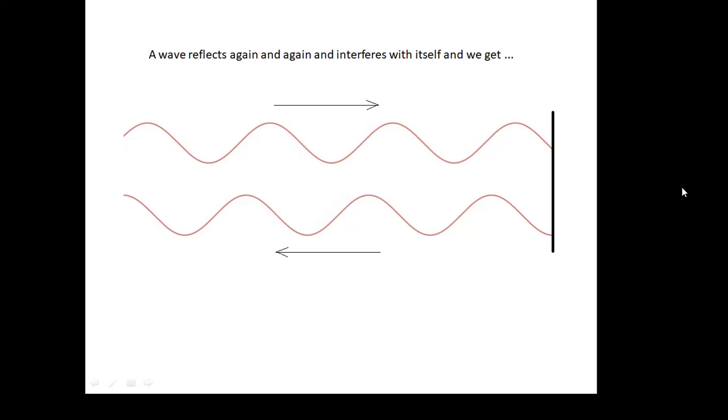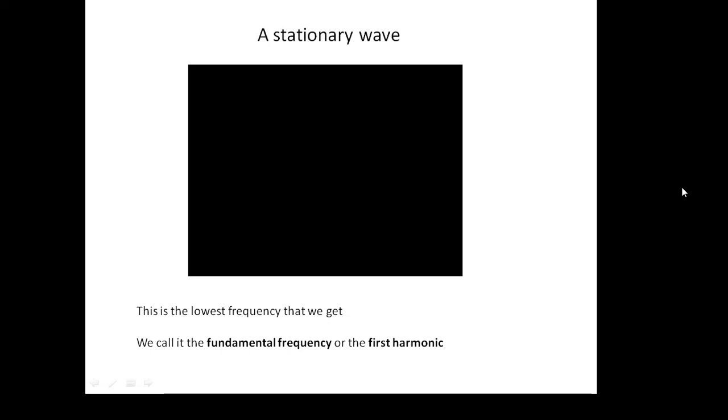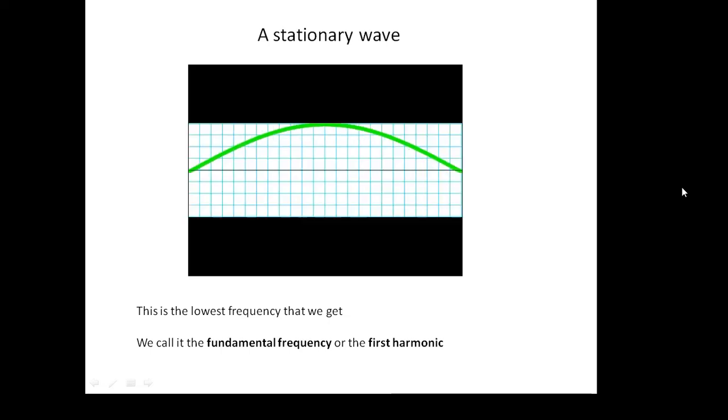What happens is that waves travel up and down the length of the string and they reflect when they get to the ends. You've got waves interfering with each other, interfering with their own reflection. We get constructive interference and we get a stationary wave. The lowest frequency that we get is called the first harmonic or the fundamental frequency.